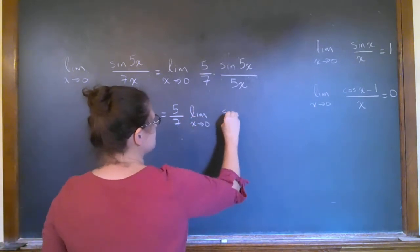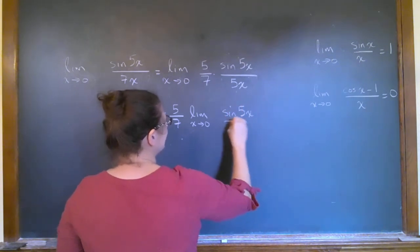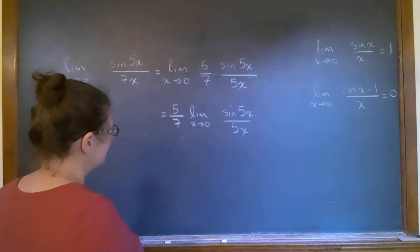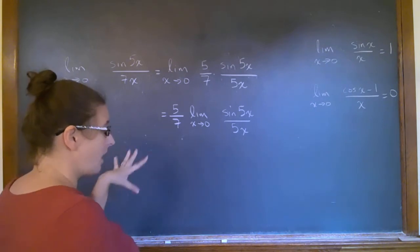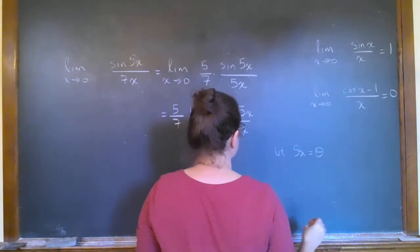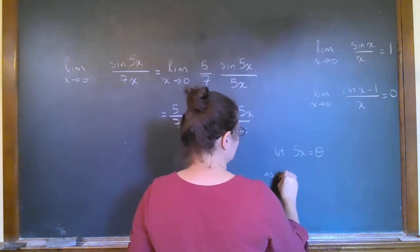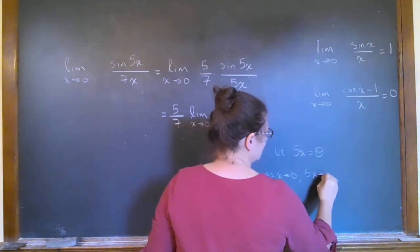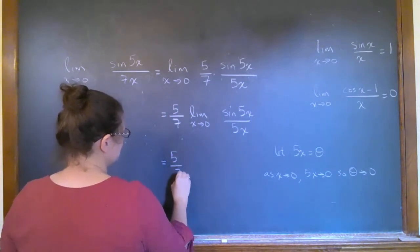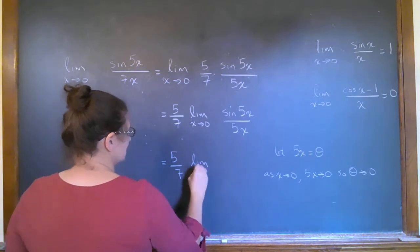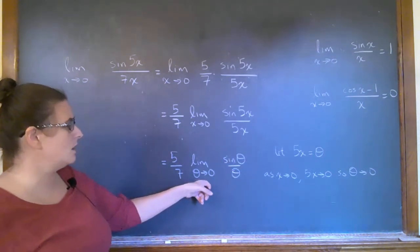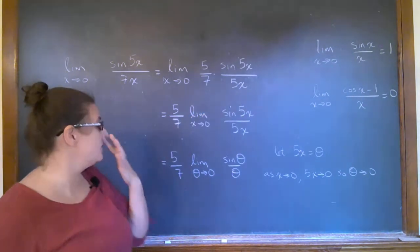Now I'm in a better spot, and in fact, for my intents and purposes you could just tell me that's one and I believe you. But to be perfectly correct, what we ought to do is make a change of variables. So let's say 5x be theta. Now as x goes to zero, 5x also goes to zero, so theta then goes to zero. You can make that change of variable specifically to make your limit look exactly like that, and then I just say that that's one.